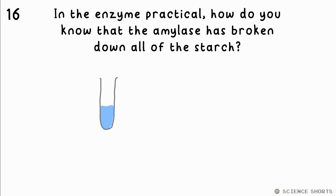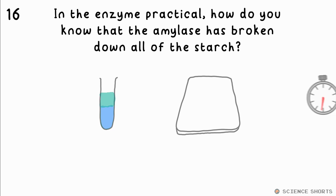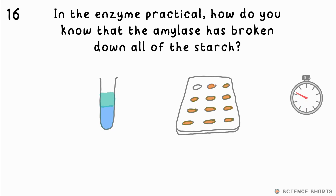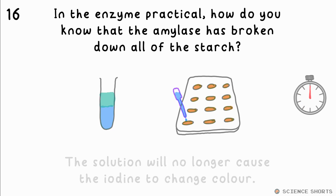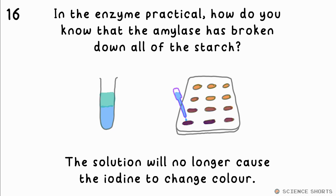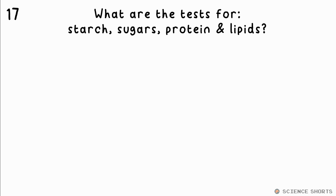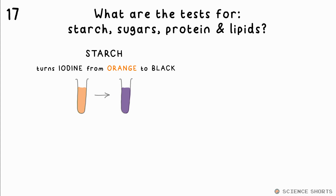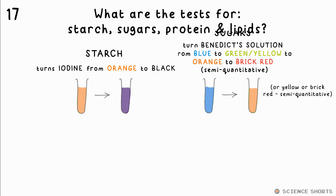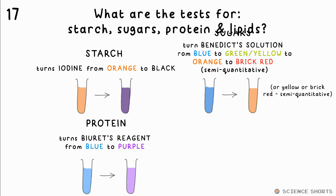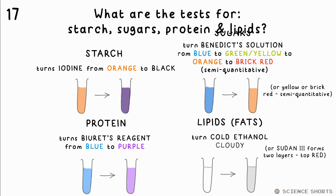In the enzyme practical, how do you know that the amylase has broken down all of the starch? The solution will no longer turn black or change colour when added to iodine in the spotting tile. What are the tests for starch, sugars, protein and lipids? Iodine turns from orange to black in the presence of starch. Sugar turns Benedict's solution from blue to orange, and maybe green in between. Protein turns Biuret's reagent from blue to purple, and lipids turn cold ethanol cloudy.